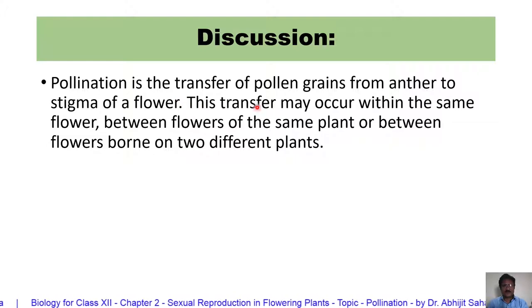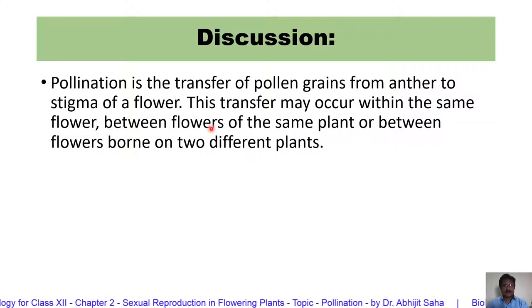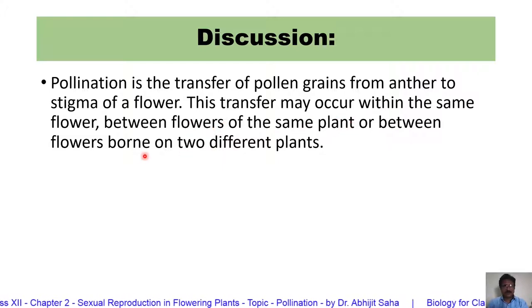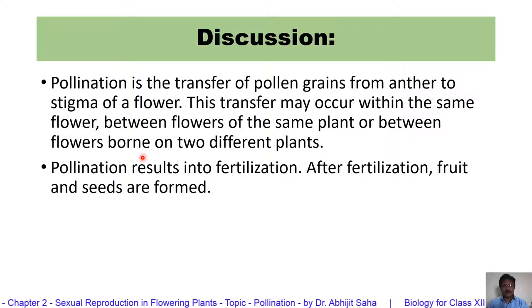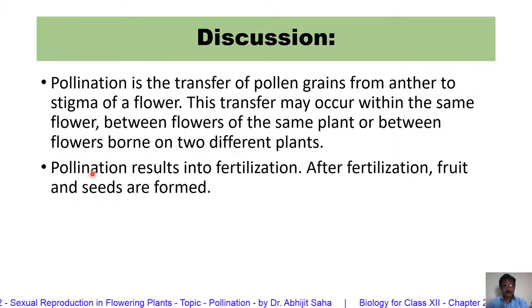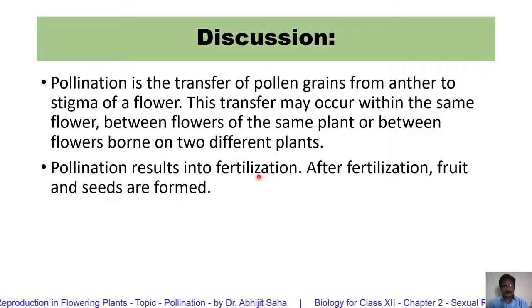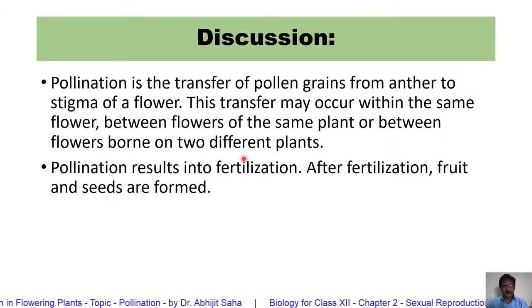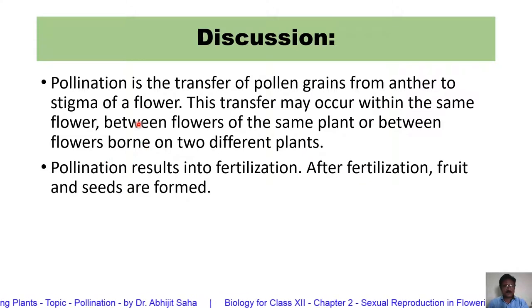This transfer may occur within the same flower, between flowers of the same plant, or between flowers born on two different plants. Pollination is required for fertilization. Fertilization is when the two gametes meet, and for this, transfer of the pollen grain onto the stigma is required.